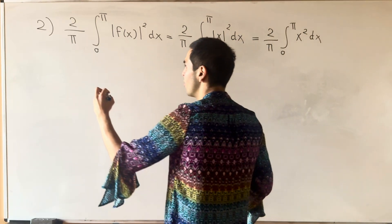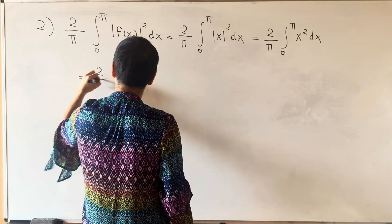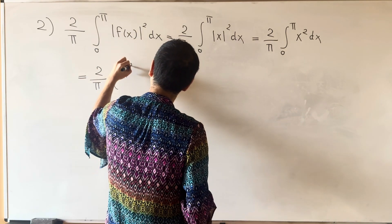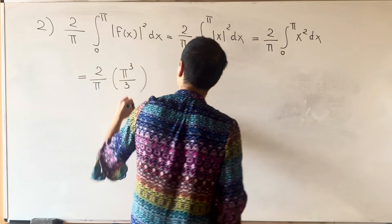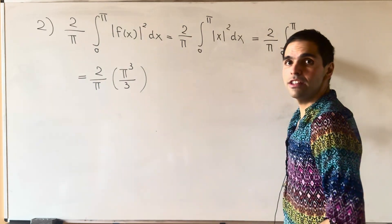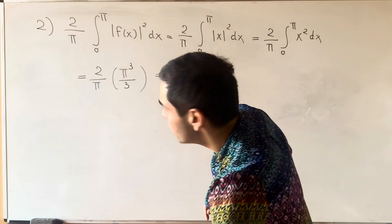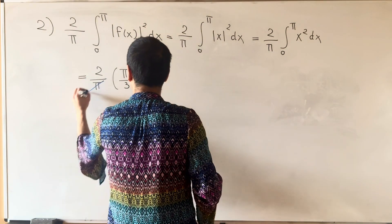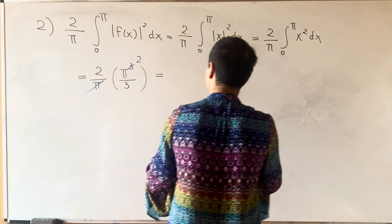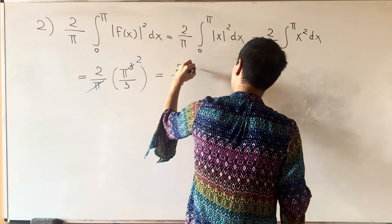And then evaluating that integral, this gives you 2 over π, and then π cubed over 3. And the antiderivative is x cubed over 3, which now simplifies to 2π squared over 3.